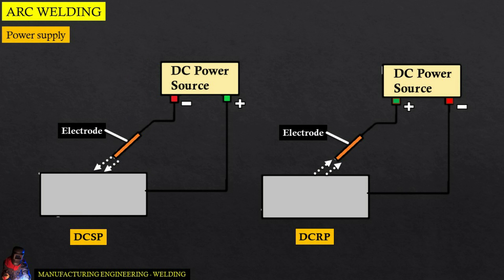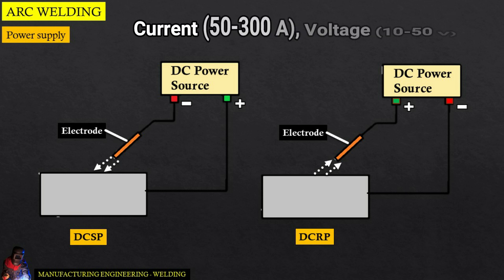The primary functions of the power source are to produce sufficient heat to melt the joint and to generate a stable arc and metal transfer. The welding process requires high current of about 50 to 300 amperes at relatively low voltage.